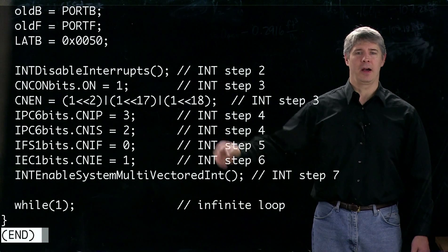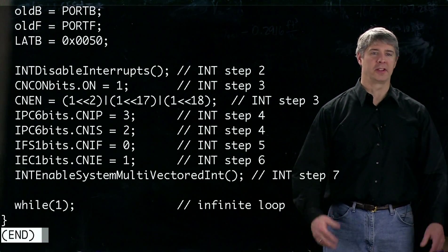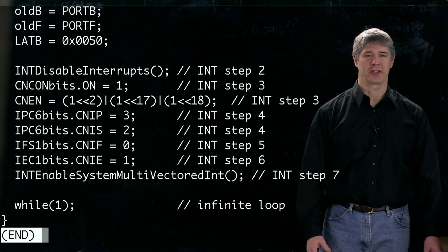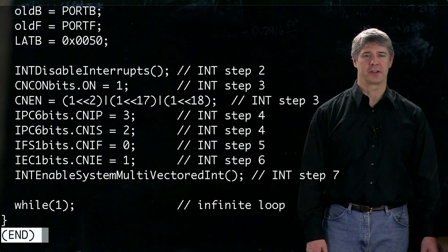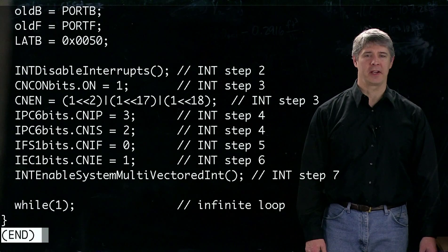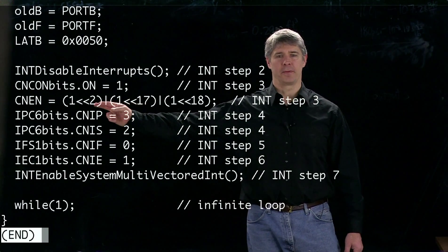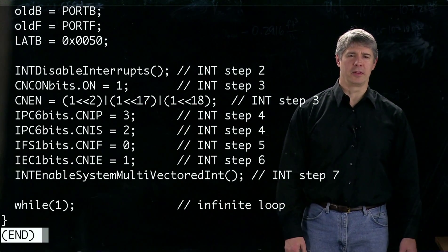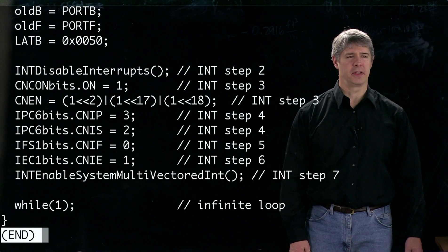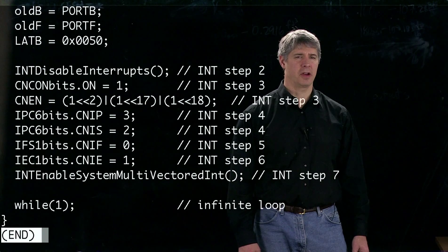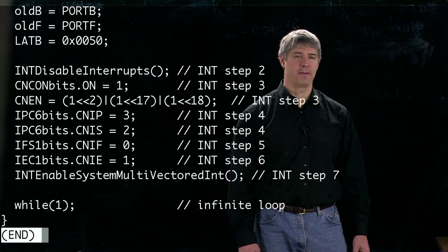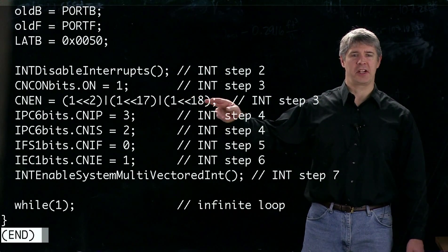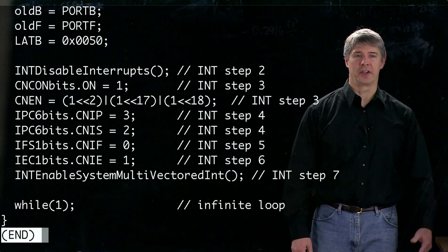In the next step, we're turning on the change notification interrupt by changing the ON bit of the CNCON special function register. We're also going to tell change notification to pay attention to change notification pins 2, 17, and 18, which correspond to pins B0, B1, and F4 on ports B and F. If there's any change on any of those three pins, we're going to generate an interrupt.